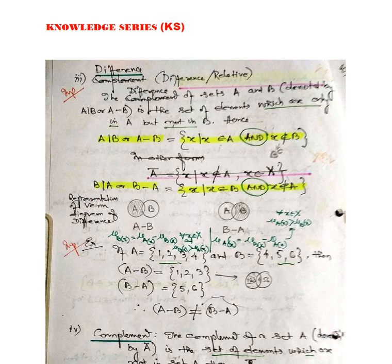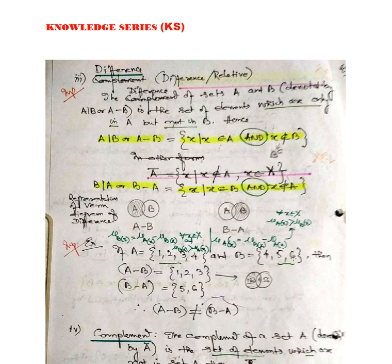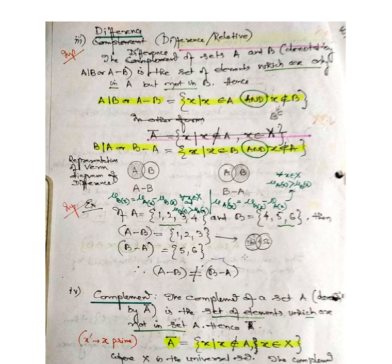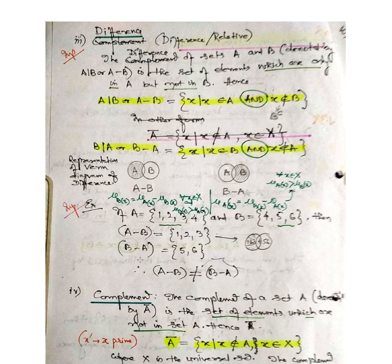If B minus A, then B's certain portion is shaded and the complete A is unshaded. For example, if A = {1, 2, 3, 4} and B = {4, 5, 6}, then A minus B = {1, 2, 3} because 4 is common and removed, and 5, 6 belong only to B. Similarly, B minus A = {5, 6}. Therefore, A minus B is not the same as B minus A.